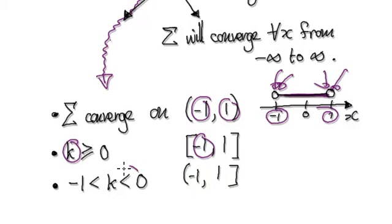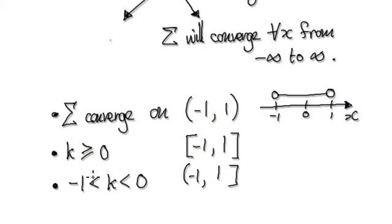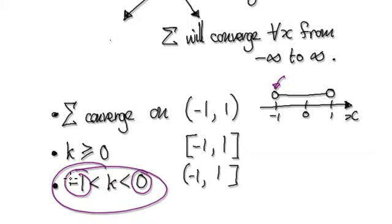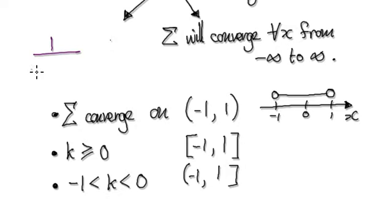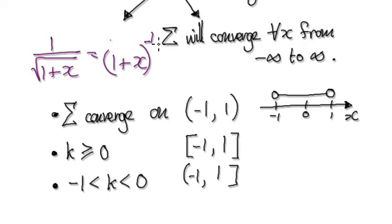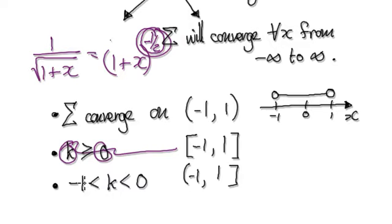But if k is between negative 1 and 0, then you can't include the endpoints. For example, looking at 1 over the square root of 1 plus x — that's the same as 1 plus x to the power of negative a half. This negative a half is in between negative 1 and 0, so in this case you can't include the endpoints.